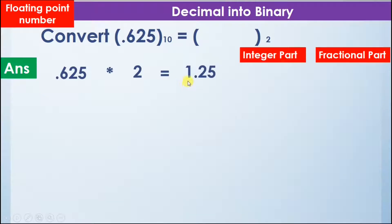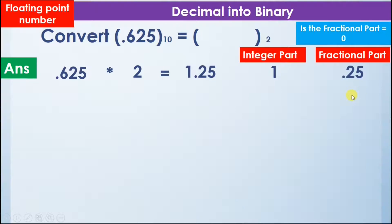Once we get the answer 1.25, we will write the integer part here and the fractional part here. The integer part is 1, so we write 1 here, and the fractional part is 0.25, so we write 0.25 here.